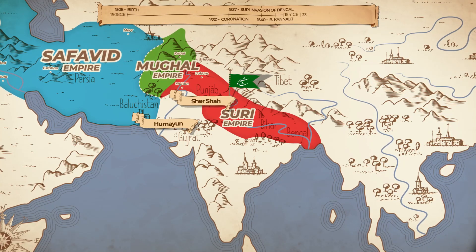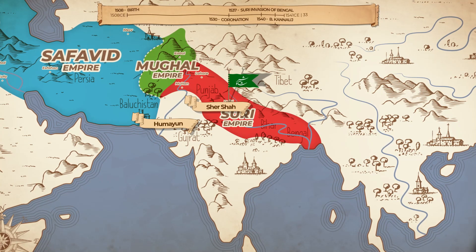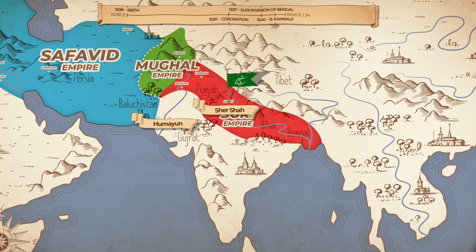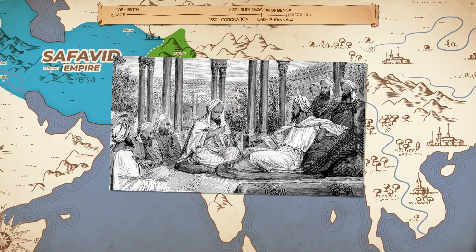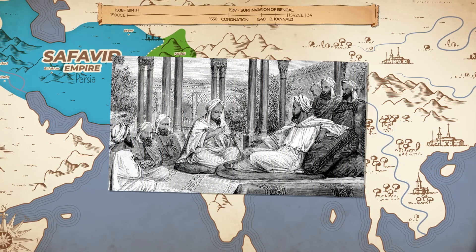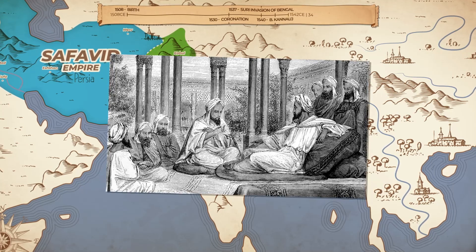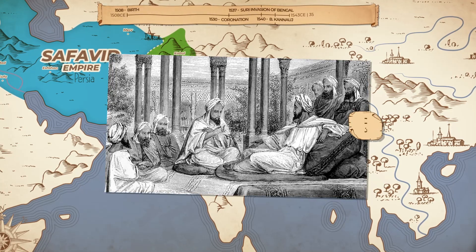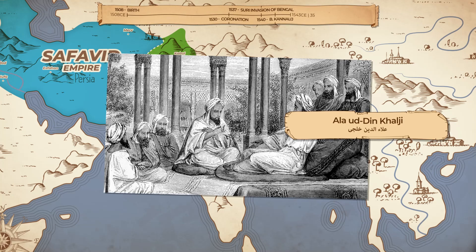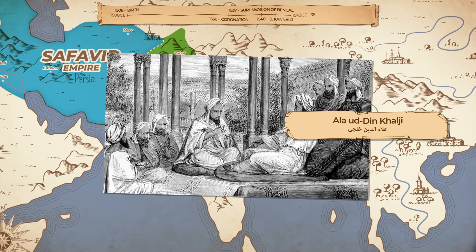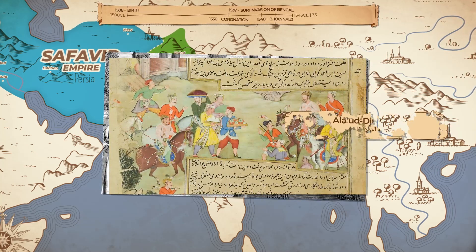Sher Shah established himself in Delhi and Agra and started to rule his new Suri Empire. By all reasonable measures, he was as great a ruler as he was a commander. In that way, he resembles another great ruler of India, Alauddin Khalji, a man Sher Shah himself looked up to. He reorganized the way land was held by noblemen.